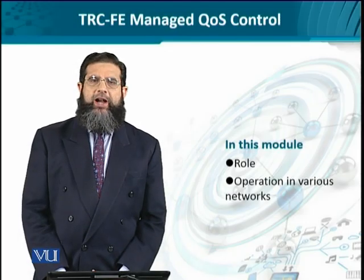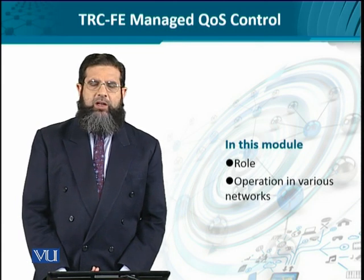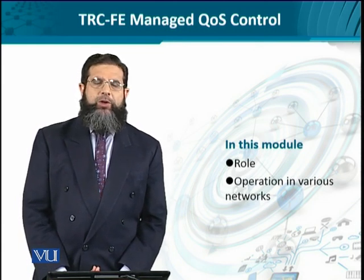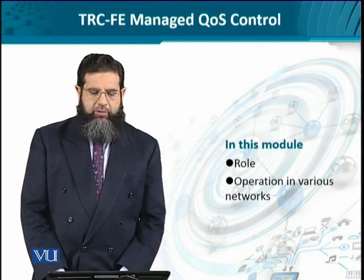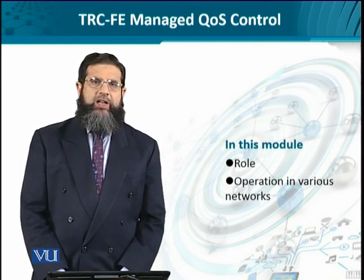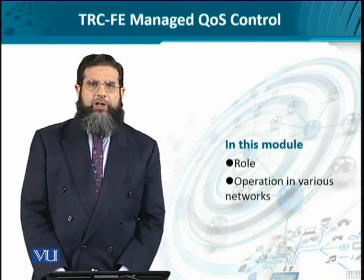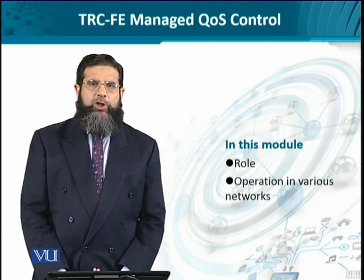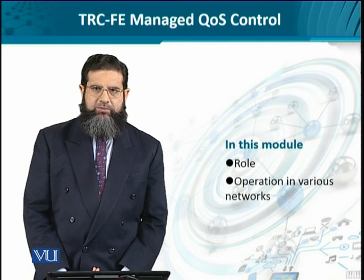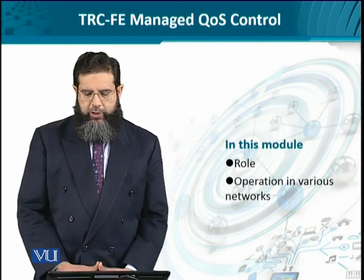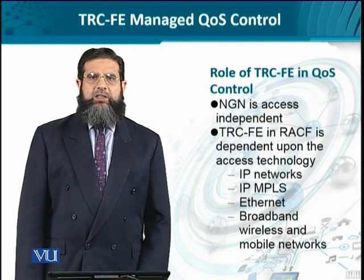Now we are going to look at the last functional entity in detail with respect to different underlying networks which it supports. The transport resource control functional entity at the end of the day manages QoS control, whichever QoS policy is coming right from the service control function. So we look at its role and then we look at the operation under different network type settings.